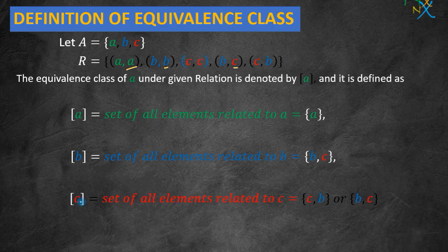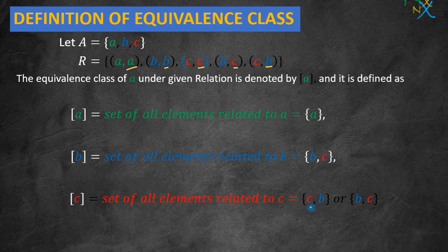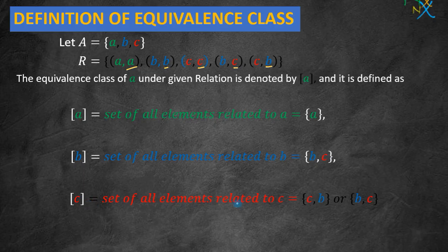Now coming to the equivalence class of c — it is the set of all elements which are related to c. Checking the relation, c is related to c and c is related to b. So the equivalence class of c is the set {c, b}. We can change the order of elements in the set. So the equivalence class of c is {b, c}.